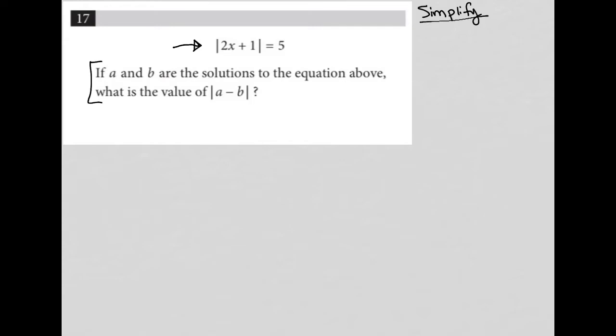In this case, we have an absolute value equation, which I will write down here. Absolute value 2x plus 1 equals 5.